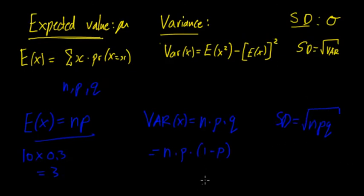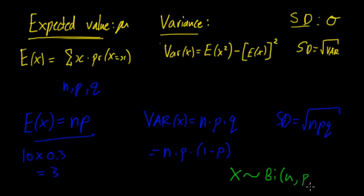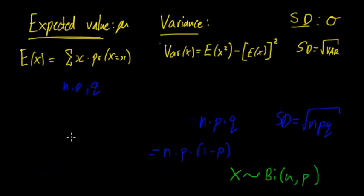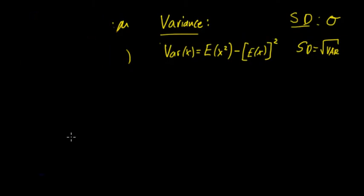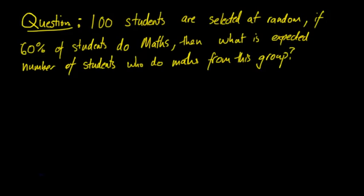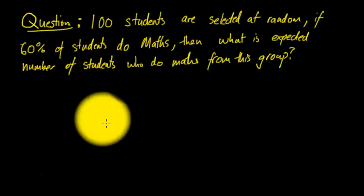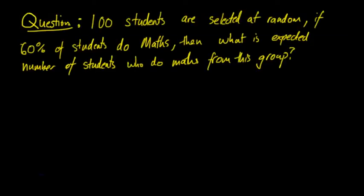Just quickly, notation-wise: sometimes a binomial distribution can be represented as X ~ B(n, p), where B represents binomial, n is the number of trials, and p is the probability of success. The main thing with these three formulas is just to memorize them. Normally it's good to know why, but in this case it often is just about knowing these three formulas.